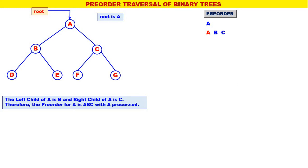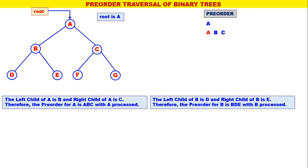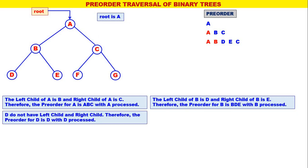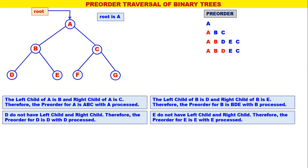Next the leftmost is b. The left child of b is d and the right child of b is e, therefore the pre-order for b is b, d, e with b processed. b is replaced by b, d, e. Now the leftmost is d — d does not have left or right child, therefore the pre-order for d is d only, with d processed. Next the leftmost is e — e does not have left or right child, therefore the pre-order for e is e only, with e processed.